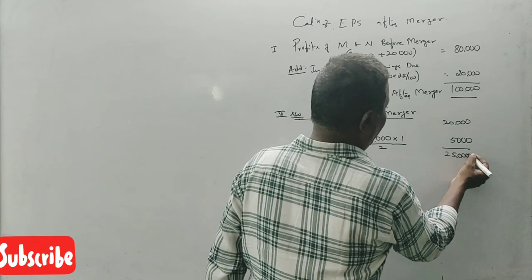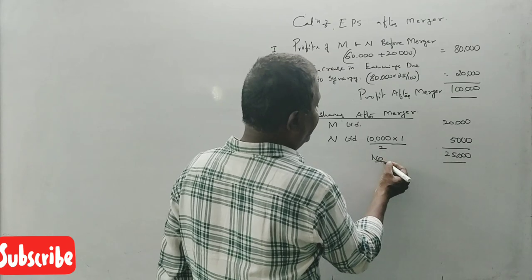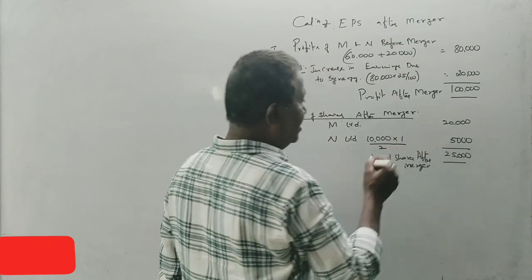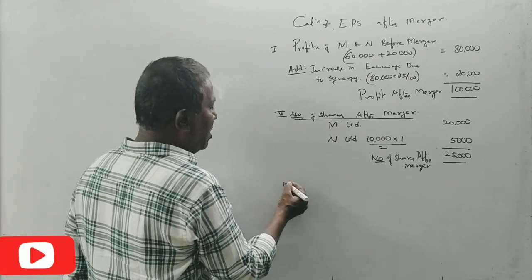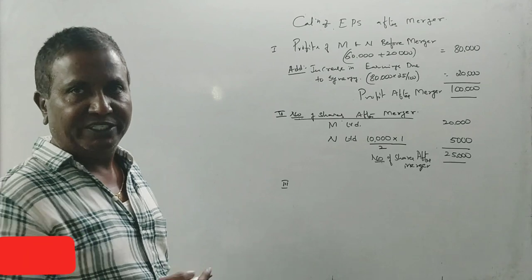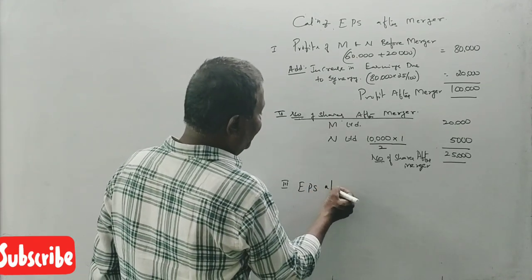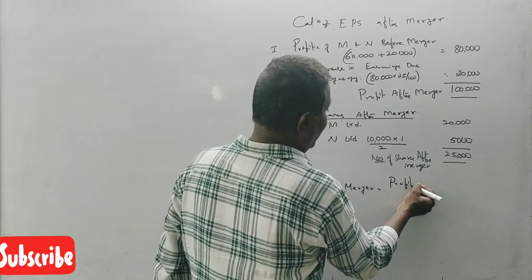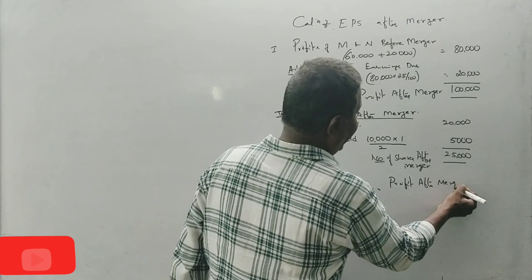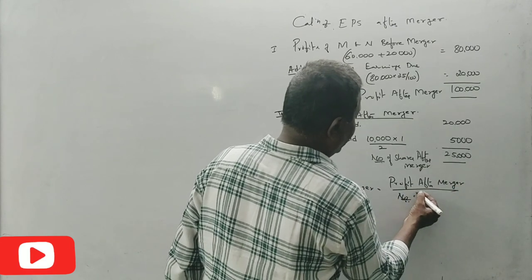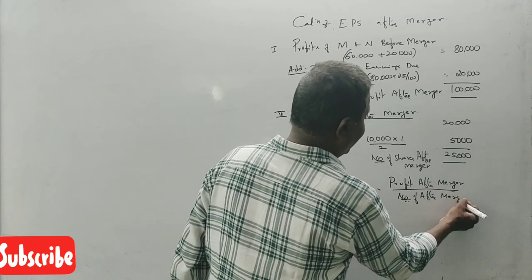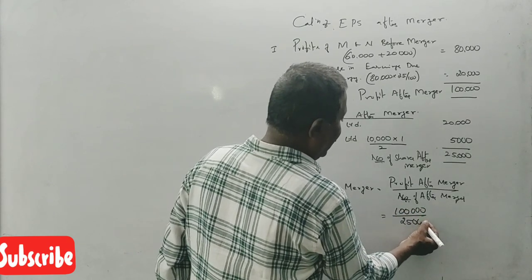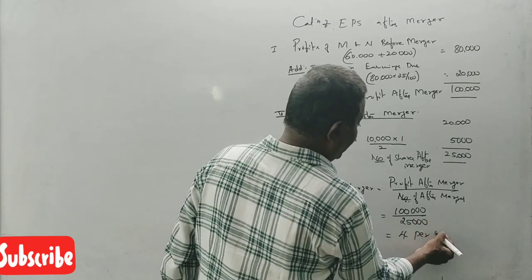Last but not the least, we'll calculate EPS after merger. EPS after merger equals profit after merger divided by number of shares after merger. So one lakh divided by 25,000 is 4 rupees per share. Before merger it was 3.